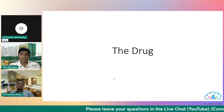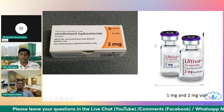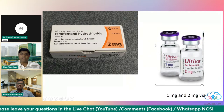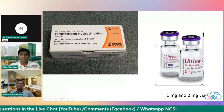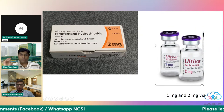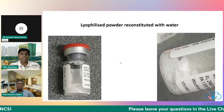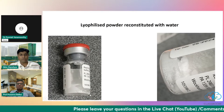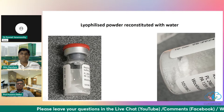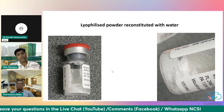Coming to the drug formulation: it will be available as 1 mg and 2 mg vials in India. The drug comes in a lyophilized powder form. You need to reconstitute it with water or saline, and then dilute it further. We push 1 ml of saline into the vial, pull out the drug, and then reconstitute it into a larger syringe such as a 50 ml syringe.